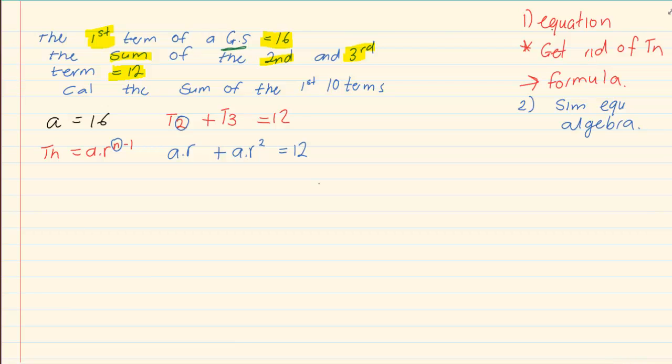In this case, what we're going to do is we're going to substitute 16 into our a's. So we have 16r plus 16r squared is equal to 12.